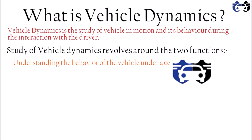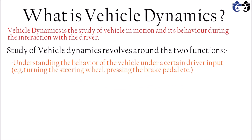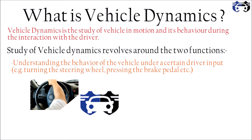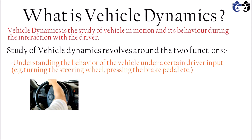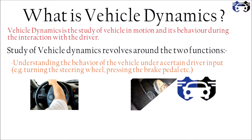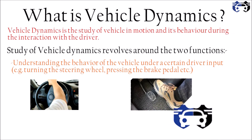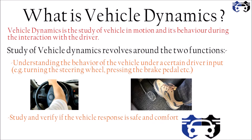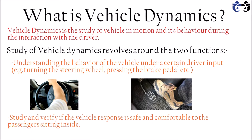The study of vehicle dynamics revolves around two functions. The first is understanding the behavior of the vehicle under certain driver inputs — for example, turning the steering wheel or pressing the brake pedal too hard. If the car is not turning at the proper turning radius, you have to correct your wheel steering angles. Similarly, if you are pressing the brake or accelerator pedal too hard, you have to correct them. The second function is to study and verify if the vehicle response is safe and comfortable to the passenger sitting inside.